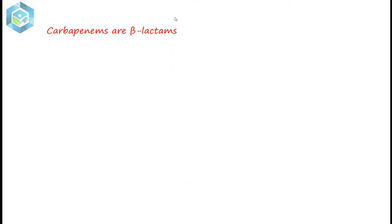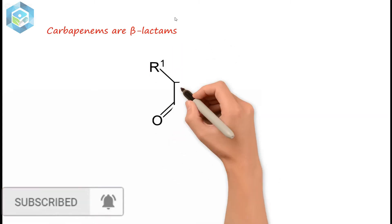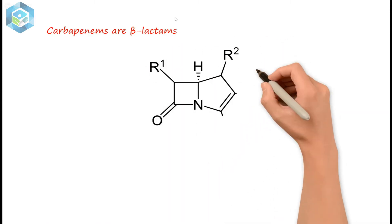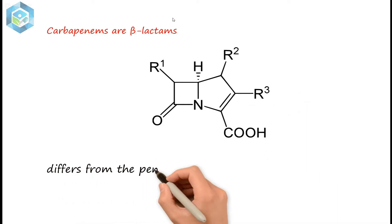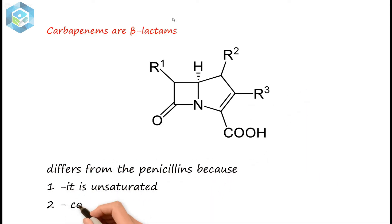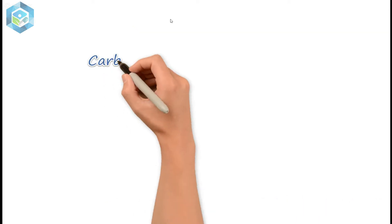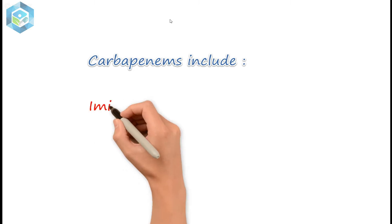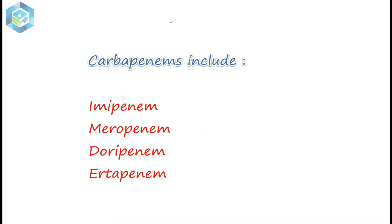Carbapenems are beta-lactams that contain a fused beta-lactam ring and a five-membered ring system. They differ from penicillins because the ring is unsaturated and contains a carbon atom instead of a sulfur atom. Carbapenems include Imipenem, Meropenem, Doripenem, and Ertapenem.